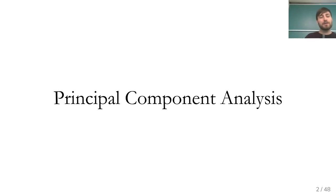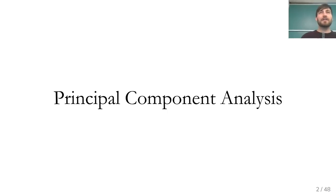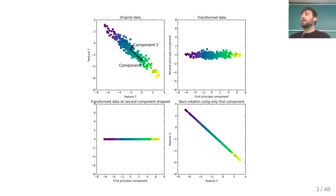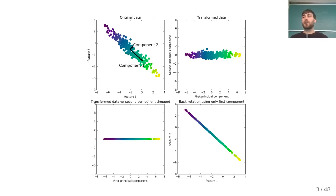We'll go through the theory a little bit and then try to get some intuition of what it does in practice and why and how we want to use it. Assume you have a dataset that is shown on the top left here. There are two input features and I colored them in some way just to visualize better what's going on.